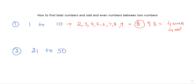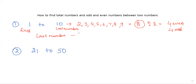And 4 numbers would be odd. But if I have more numbers, like if I need the numbers between 1 to 100, how will I calculate? There is a simple formula: take the last number minus the first number, then subtract 1, and you get the total count of numbers.